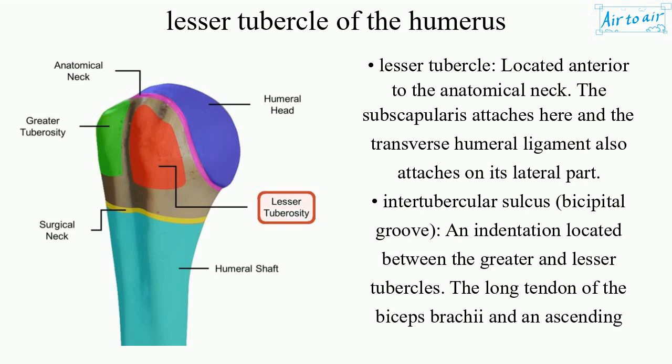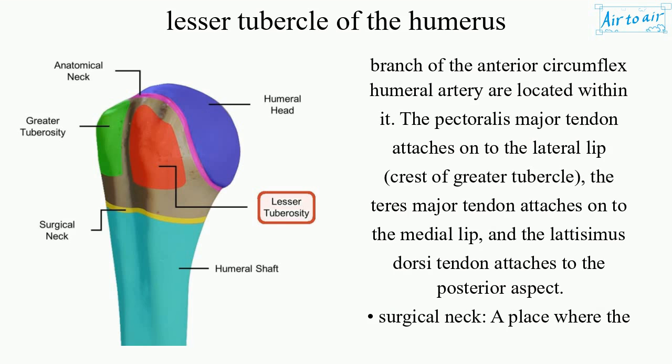Intertubercular sulcus, or bicipital groove — an indentation located between the greater and lesser tubercles. The long tendon of the biceps brachii and an ascending branch of the anterior circumflex humeral artery are located within it. The pectoralis major tendon attaches onto the lateral lip (crest of greater tubercle), the teres major tendon attaches onto the medial lip, and the latissimus dorsi tendon attaches to the posterior aspect.